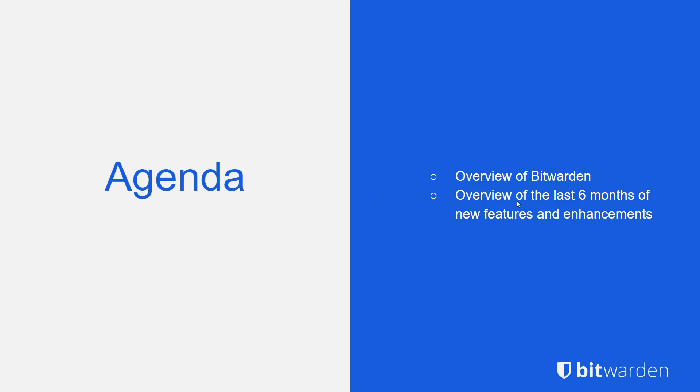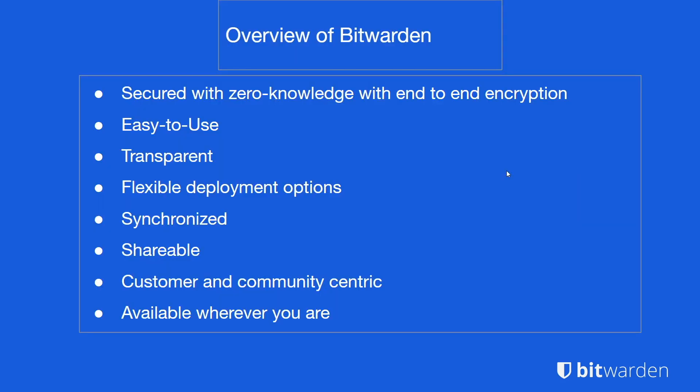It's going to be an overview of the last six months of new features and enhancements, and a brief overview of the Bitwarden we all know and love. Bitwarden is secured with an end-to-end encrypted zero-knowledge model. We are easy to use, completely transparent — you can vet our code since we are open source. We have flexible deployment options, be it a SaaS-based solution or an on-prem solution, synchronized across all of your devices, shareable, customer and community-centric, and available wherever you are, be it online or offline.